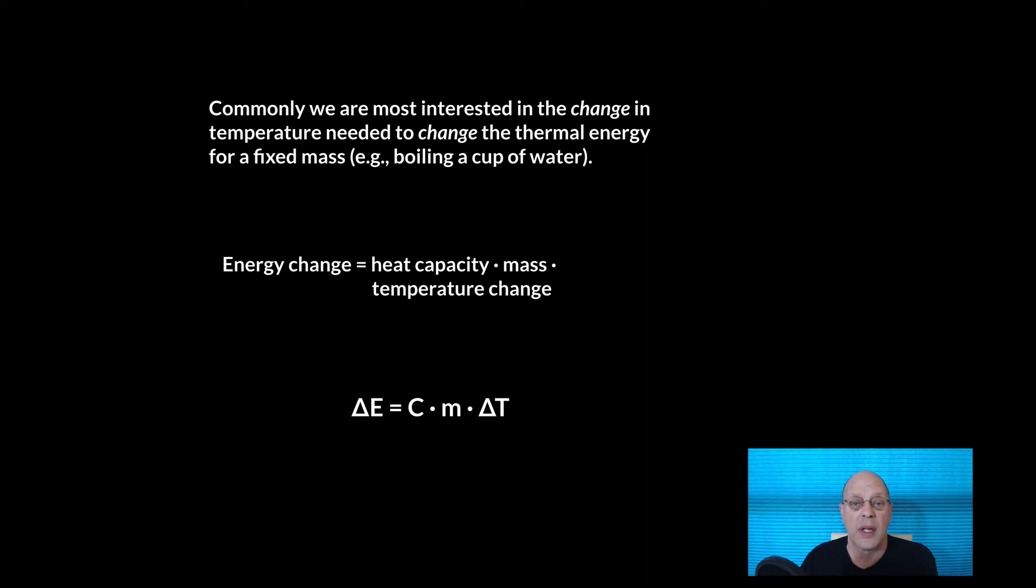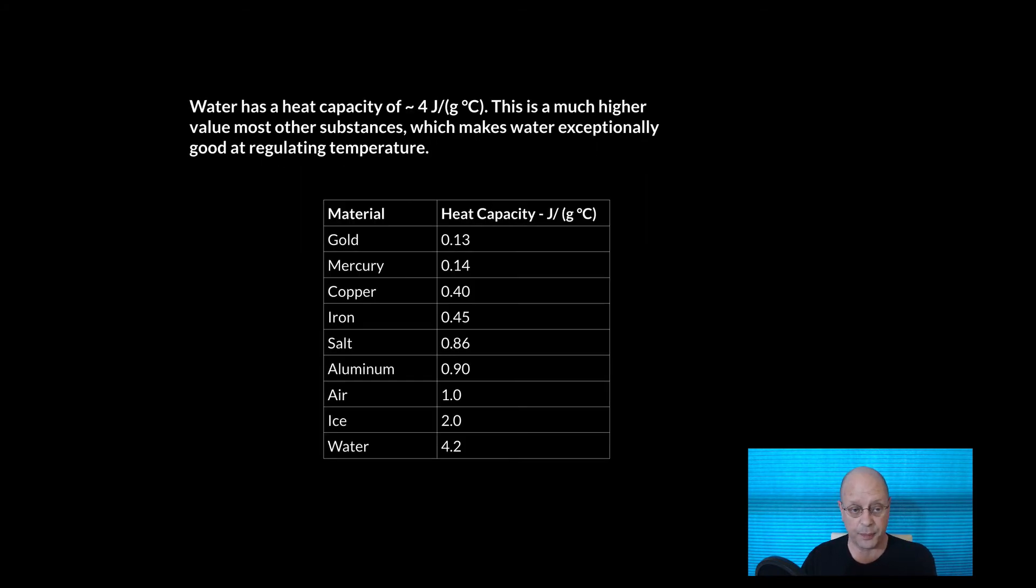And so let's take a look at what some of the heat capacities of different materials are. So water has an amazing heat capacity of about four joules per gram per degree centigrade. This is much higher than other substances and it makes water exceptionally good at regulating temperature. This is super important for biology so that your cells do not respond immediately to a temperature because that temperature change, that energy change is soaked up by the water in your cell and so it acts to buffer temperature changes.